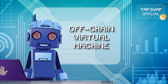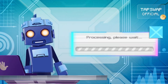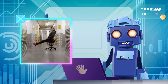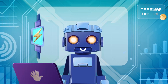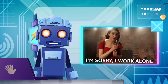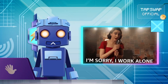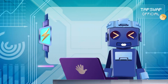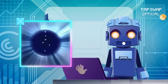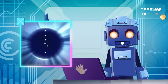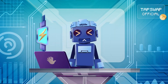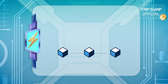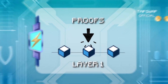Then there's the off-chain virtual machine, which processes transactions and stores temporary states. It executes transactions independently of Ethereum's virtual machine, but ensures that the final state transitions align with the layer 1 blockchain. Proofs are generated and sent back on-chain to guarantee correctness.